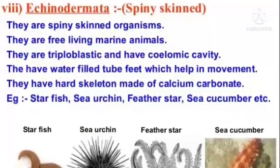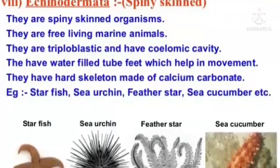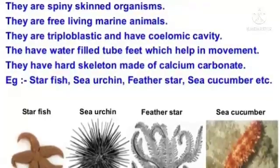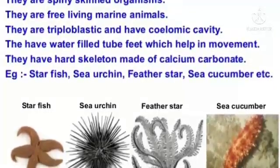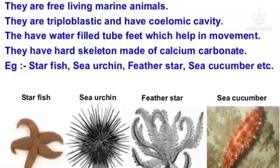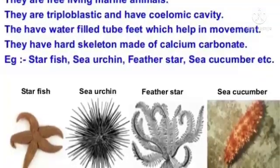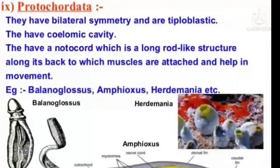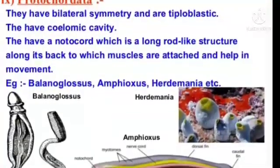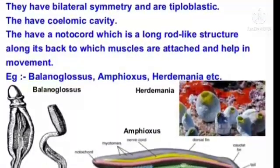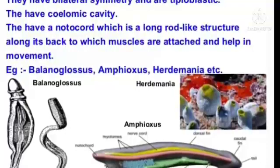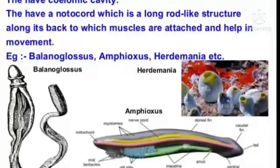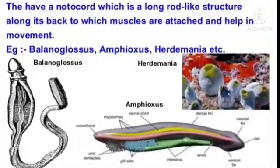Echinodermata: they are spiny-skinned organisms. They are free-living marine animals, triploblastic, and have a coelomic cavity. They have water-filled tube feet which help in movement. They have a hard skeleton made of calcium carbonate. Examples: starfish, sea urchin, feather star, sea cucumber, etc. Protocordata: they have bilateral symmetry and are triploblastic with a coelomic cavity. They have a notochord — a long rod-like structure along the back to which muscles are attached, helping in movement. Examples: Balanoglossus, Amphioxus, Herdmania, etc.